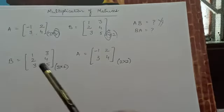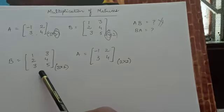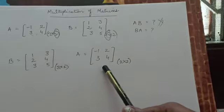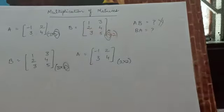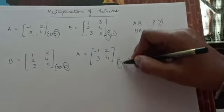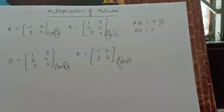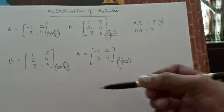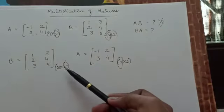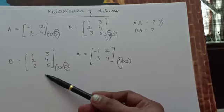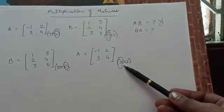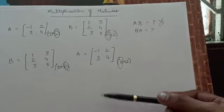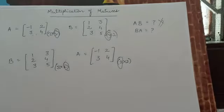Now you can see B has come to the front and A has gone to the back. If we apply the same condition — that columns in the first matrix must equal rows in the second matrix — the condition is now satisfied. We may call it: the number of columns in the pre-factor must equal the number of rows in the post-factor. So now we can start the process of multiplication.